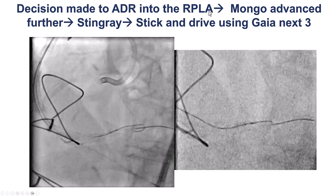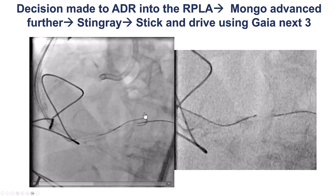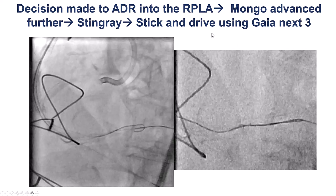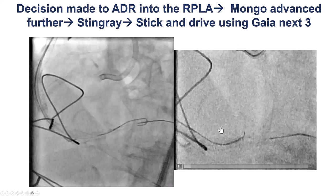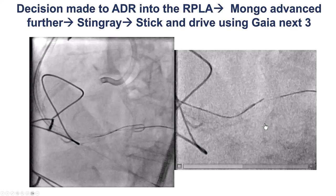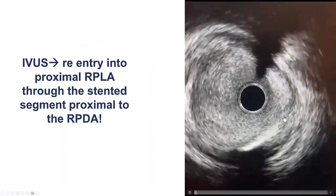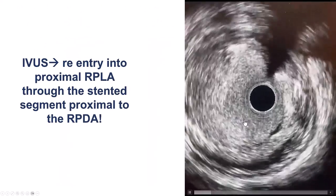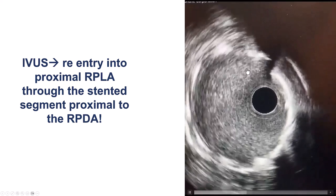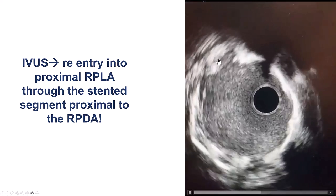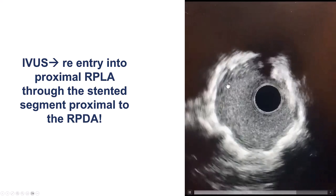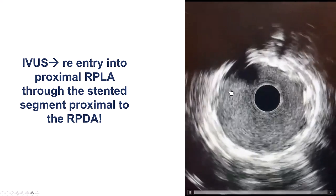Finally, we decided to do ADR into the right posterior lateral. We advanced the Mongo, did the Stingray balloon, and essentially performed a stick-and-drive using the Gaia X3. There was nice advancement, and now we have overlap of the wire placed there through the saphenous vein graft. We then did the Navius, and to our great and pleasant surprise, we had actually re-entered inside the previously placed stent — not distal to it, but actually through the previously placed stent — which was wonderful.